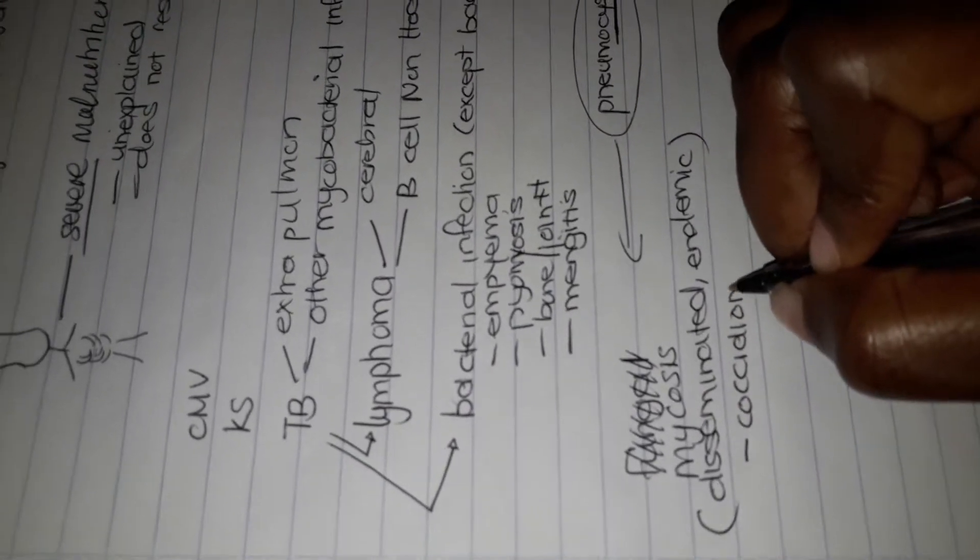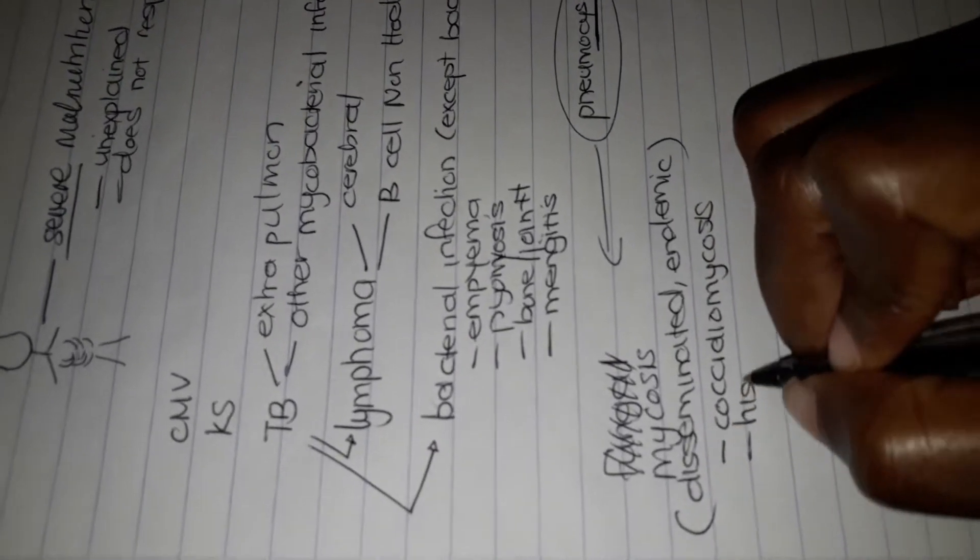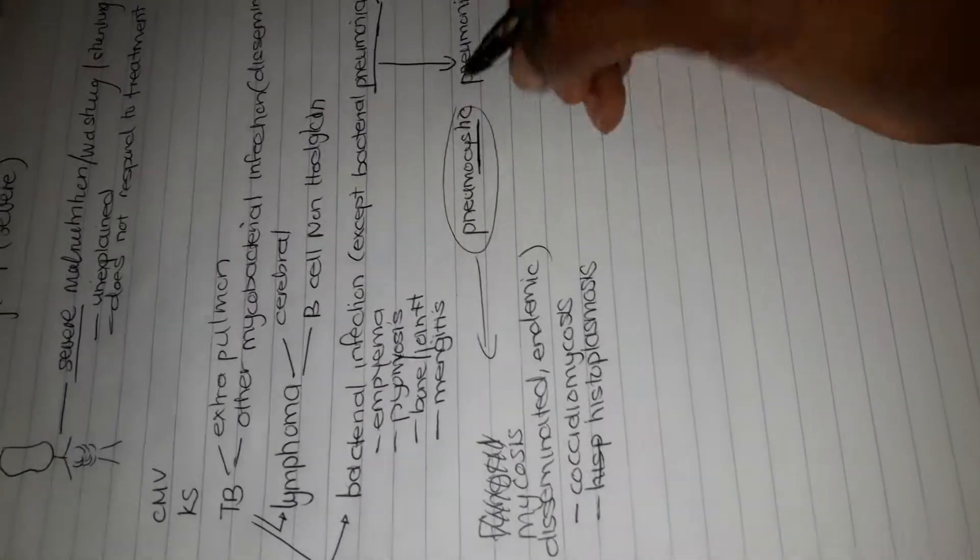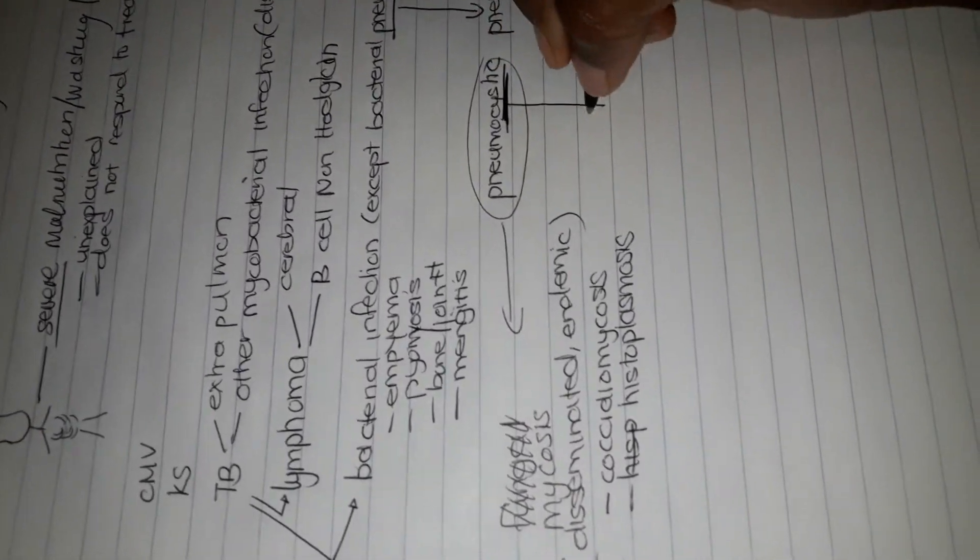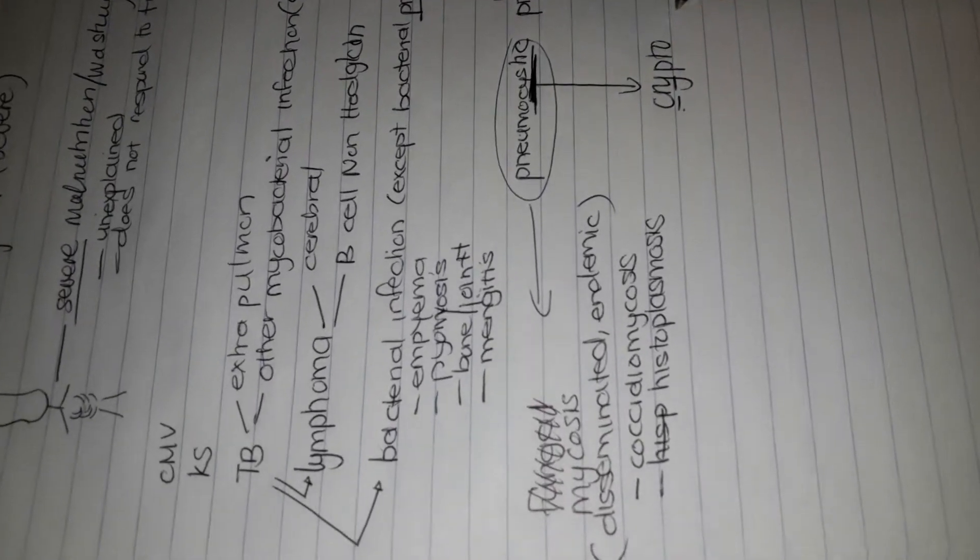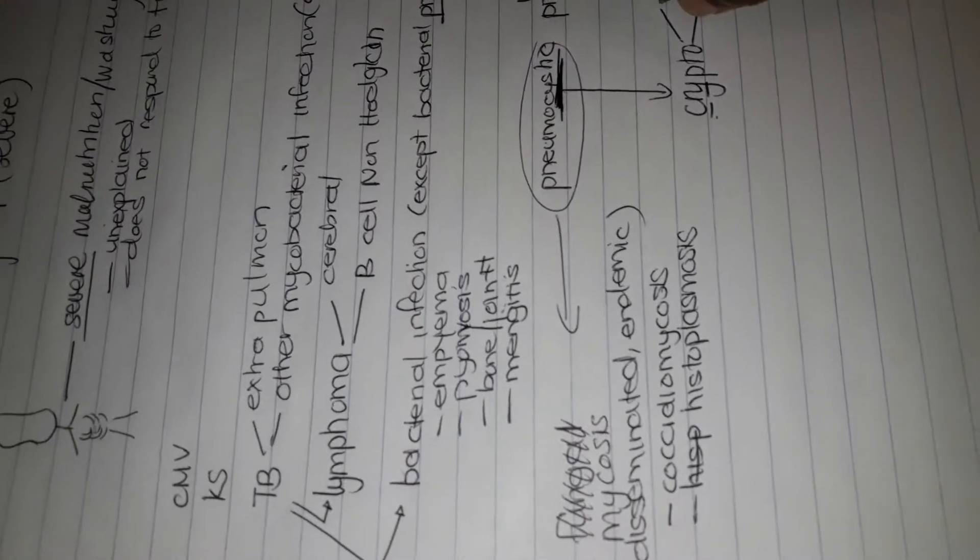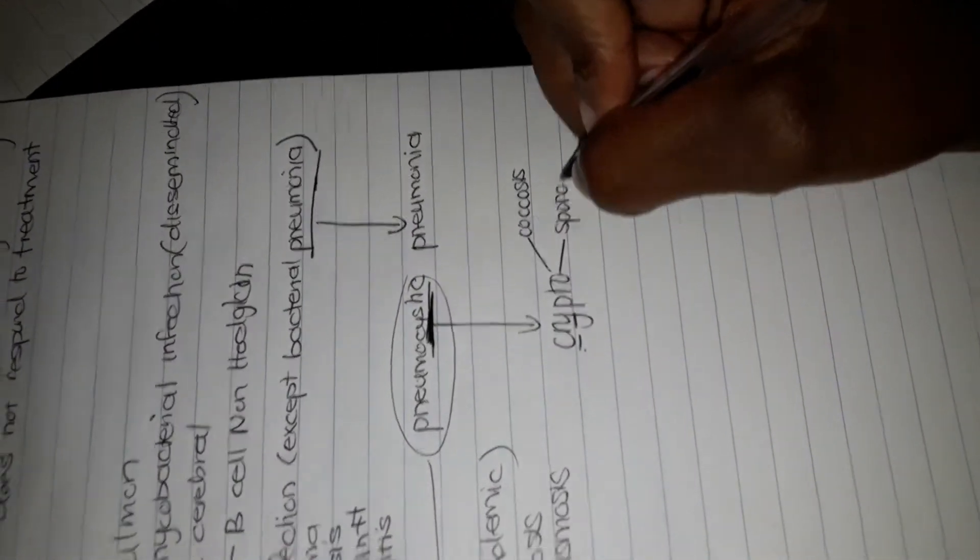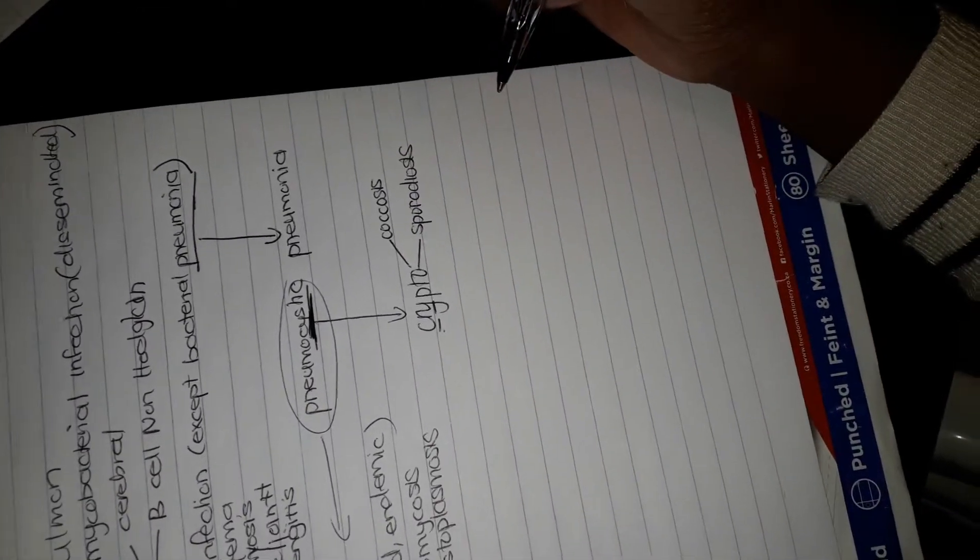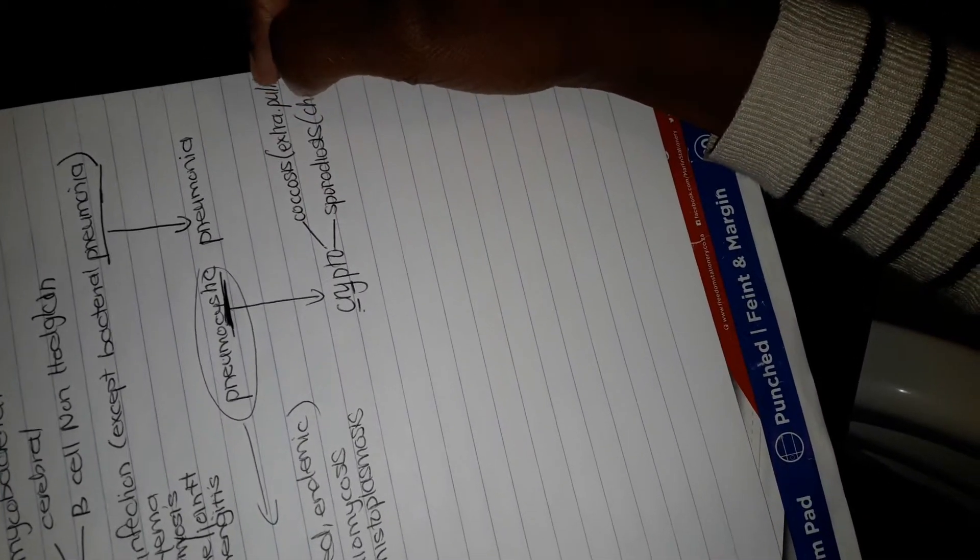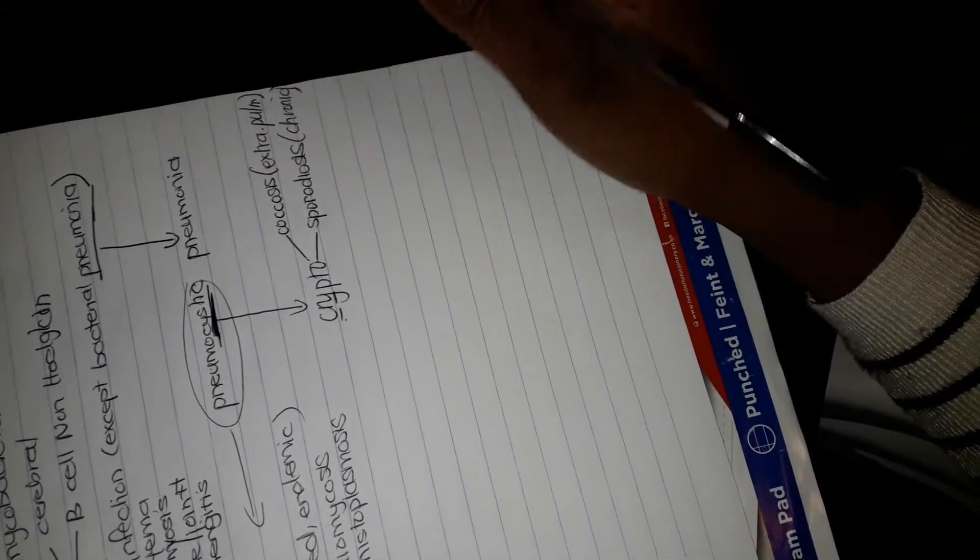The types can be coccidiomycosis or histoplasmosis. The word cystic in pneumocystis reminds me of crypto, probably because of the C and the Y's in these words. These patients will have what we call cryptococcosis or cryptosporidiosis. This cryptococcosis should be extra pulmonary, and this cryptosporidiosis should be chronic.